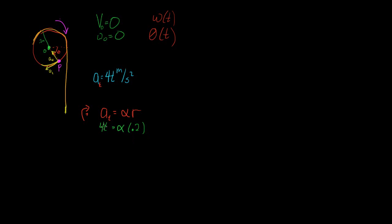If we solve for our angular acceleration, we get alpha equal to 20t radians per second squared. Now, this angular acceleration is a function of time because there's a t in the expression, so we cannot use the standard kinematic expressions for rotation about a fixed axis — those require constant acceleration, and this one is not constant.